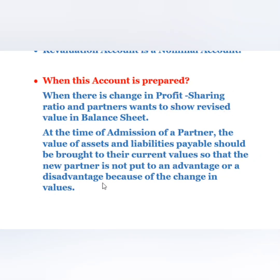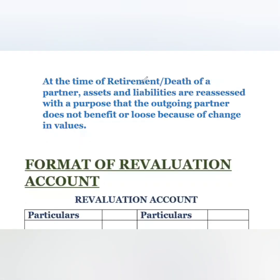The third situation is retirement or death of a partner. At the time of retirement or death, assets and liabilities are reassessed so that the outgoing partner does not benefit or lose because of the change in values. They prepare a revaluation account, and if there is any gain or loss, it is distributed among all partners — including the outgoing partner — in the old ratio.